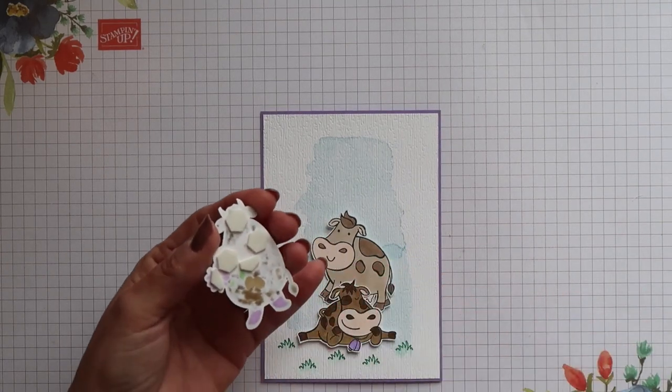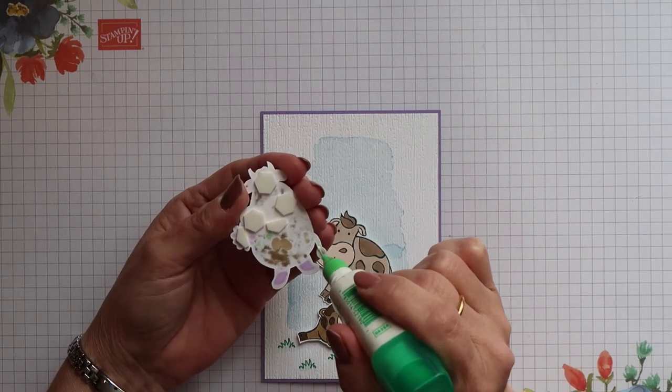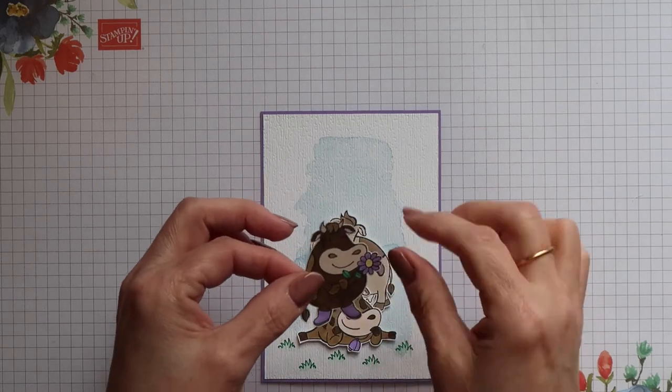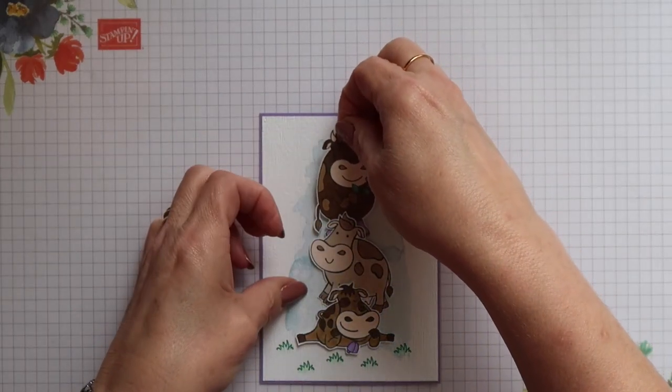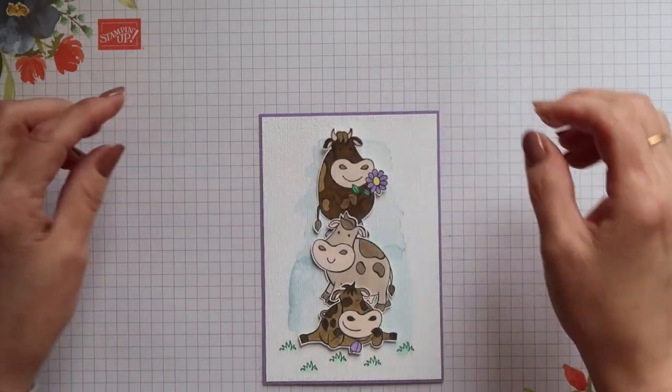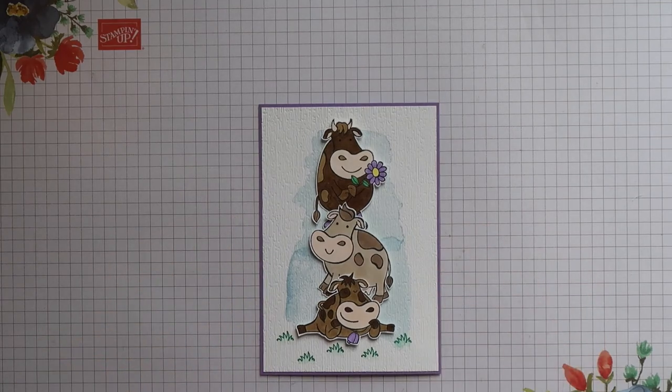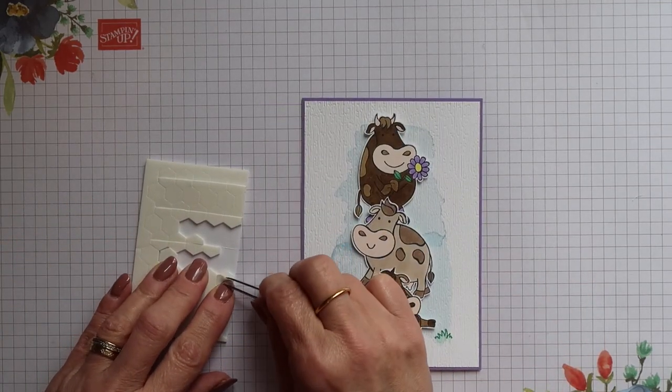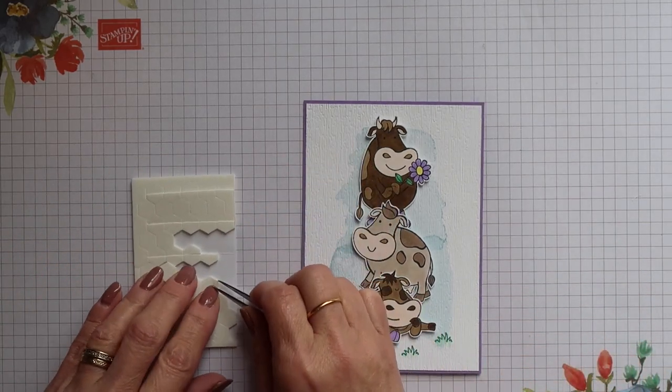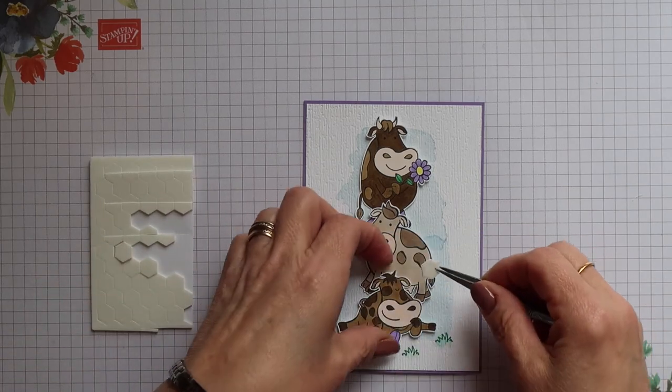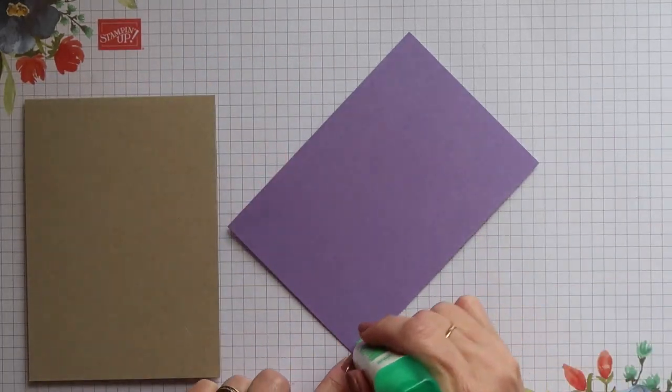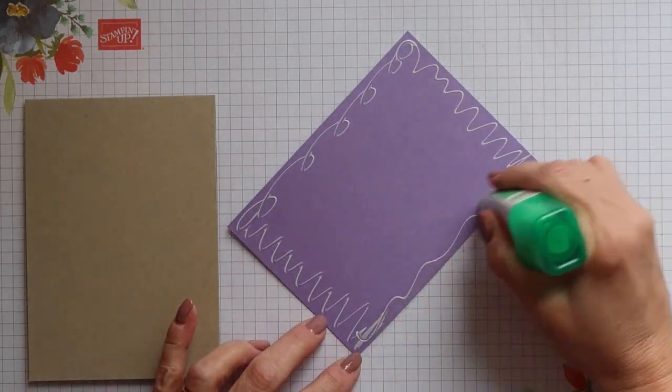And then again remove the backs from the dimensionals on the final cow. Add glue to the bottom portion of him. And then slot him into position behind that middle cow and press him down. To finish off I'm just going to slot a dimensional behind each of the bottom two cows' heads just so they're supported and raised up. And then I can go ahead and add this completed panel onto the front of my card base.